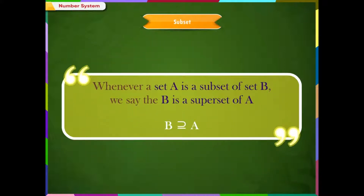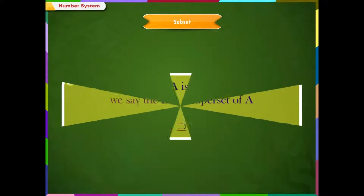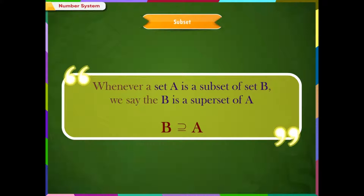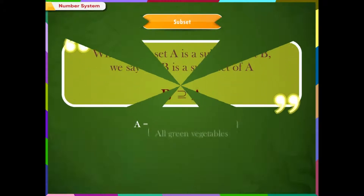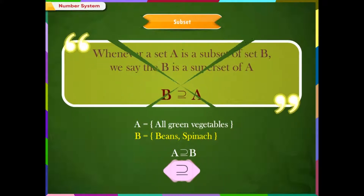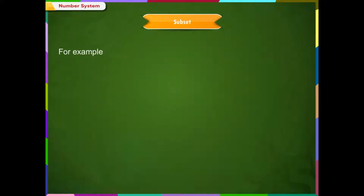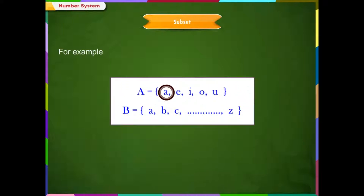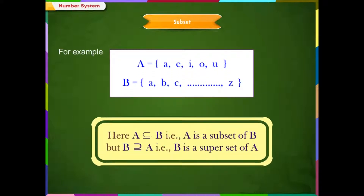Superset: whenever a set A is a subset of set B, we say that B is a superset of A. Superset can be remembered as the parent set and the subset as the child set. For example, if A contains all green vegetables and B contains only beans and spinach, then A is the superset of B. This symbol is used to denote 'is a superset of.' If set A is equal to {A, E, I, O, U} and set B is equal to {A, B, C, ... Z}, then A is a subset of B but B is a superset of A.